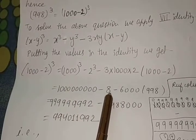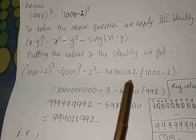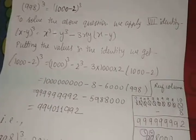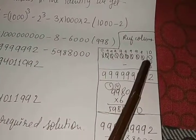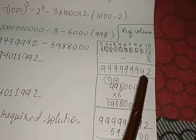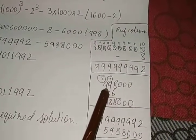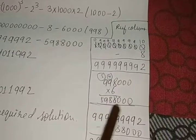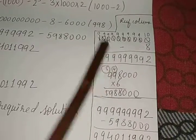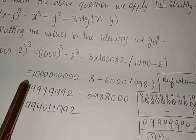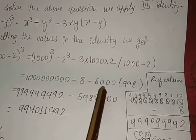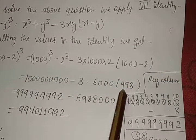Now we just subtract these two terms, that means 8 from 100 crores, and we just multiply 6000 by 998. I'll show you the rough column. We subtract 8 from 100 crores and we get this number after subtraction. We multiply 998 with 6000 and we get this number as the answer. Now put both of these values into the further solution.